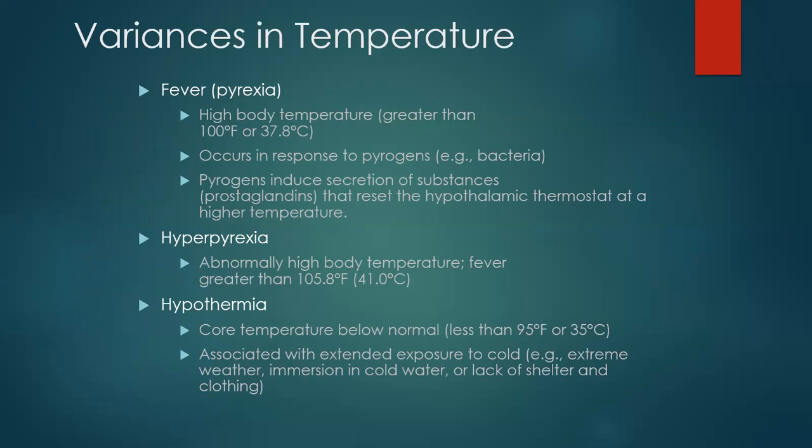Temperature variances: pyrexia means the patient has a fever — they are febrile — with a temperature greater than 100°F (100.4°F in children). A higher fever is typically the body's response to a pyrogen such as bacteria or a virus. Hyperpyrexia refers to very high temperatures, like 105.8°F or greater, which can result from a severe bacterial infection. Hypothermia is when the core temperature is less than 95°F, due to extended exposure to cold — such as immersion in cold water or lack of shelter in winter.